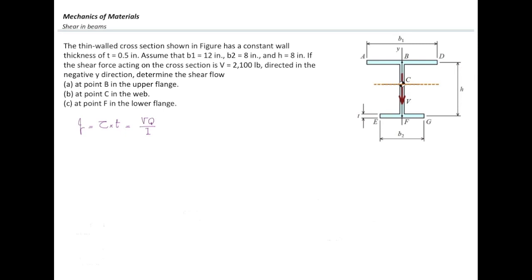Determining the moment of inertia and centroid location is something we have covered before, so I won't go into detail. The centroid is located 4.83 inches from the bottom, and Iz, the moment of inertia about the horizontal axis, is 173 in⁴. Now let's focus on calculating the first moment of area Q for these three points.